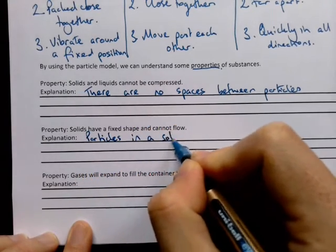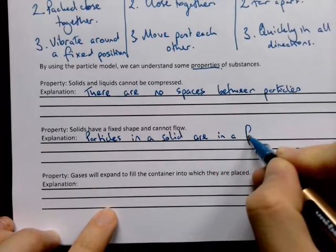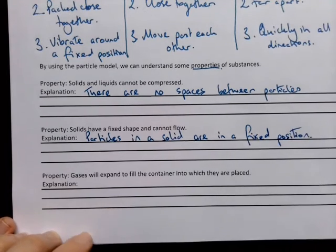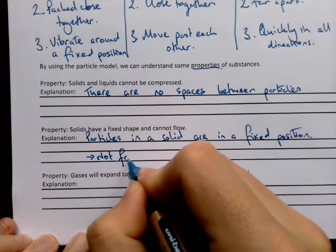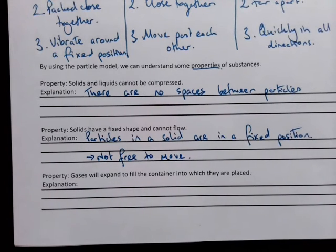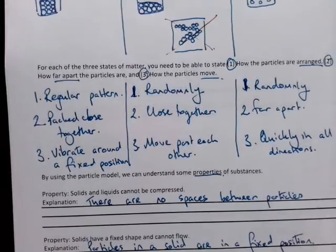The particles in a solid are in a fixed position — in other words, they are not free to move, and that is why a solid will not flow. An apple put in a bowl just stays like an apple because all the particles in the apple stay where they are; they're still vibrating but they don't move around.